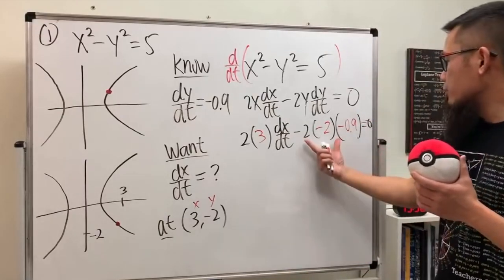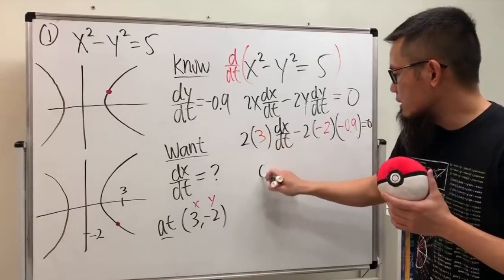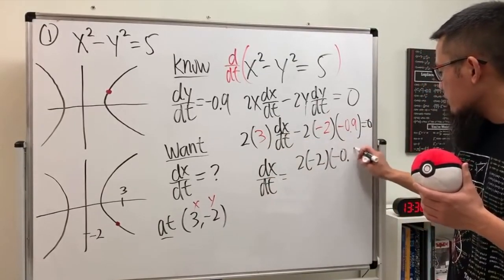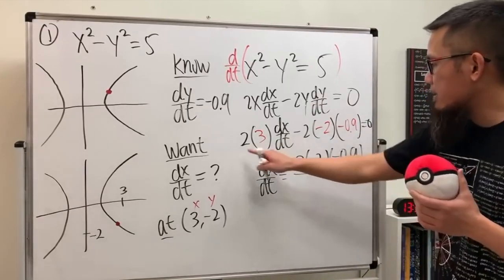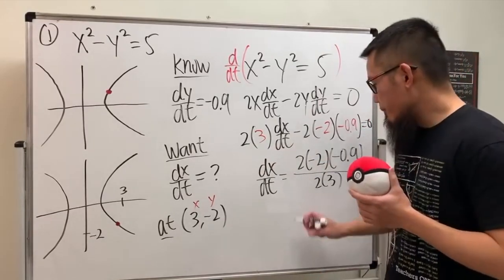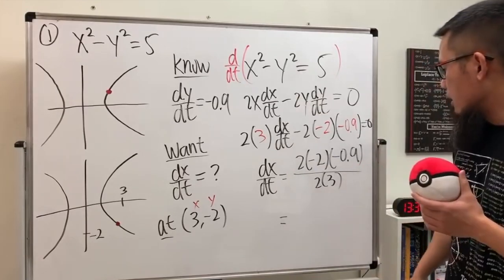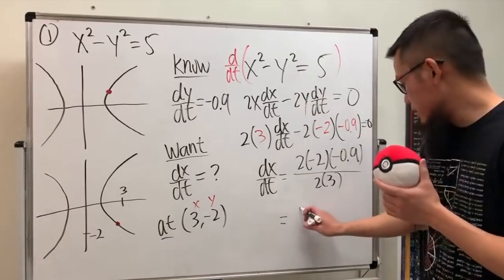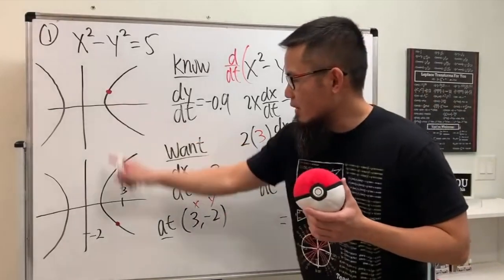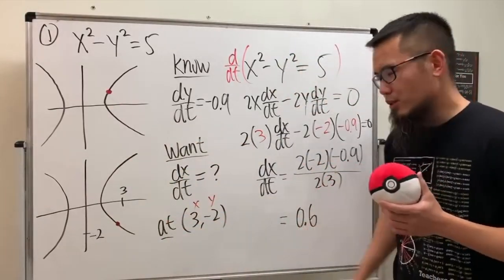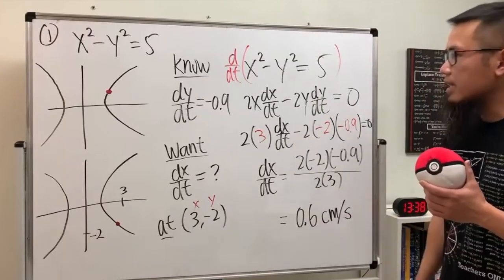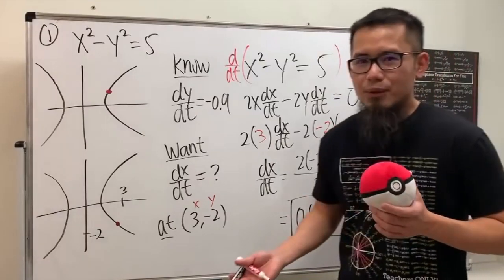Moving terms to the other side and dividing both sides by 2 and 3, we get dx/dt = 2(-2)(-0.9) divided by (2)(3), which comes out positive. We get dx/dt = 0.6. The answer is positive because we are moving to the right — positive direction. The unit is centimeters per second.